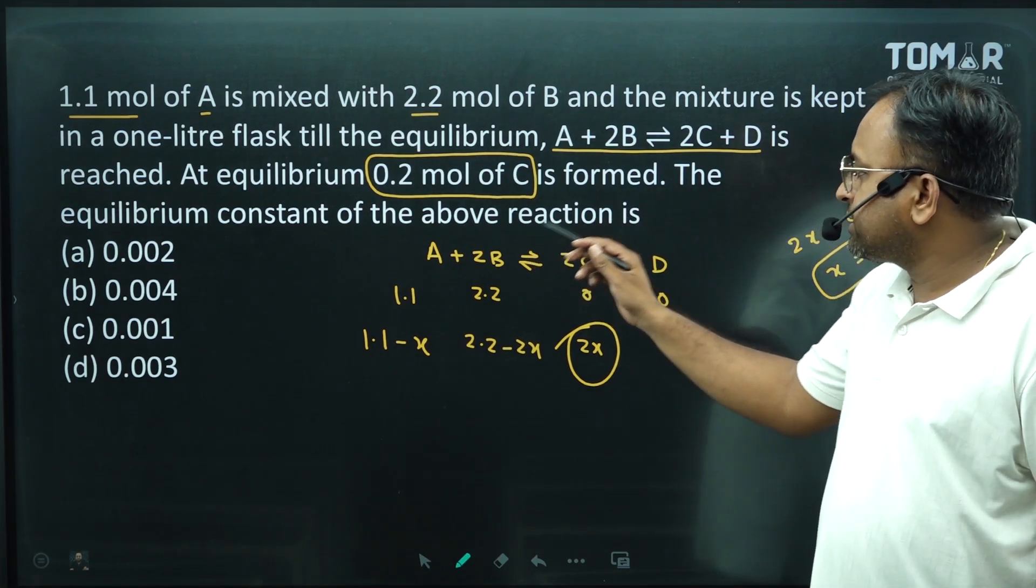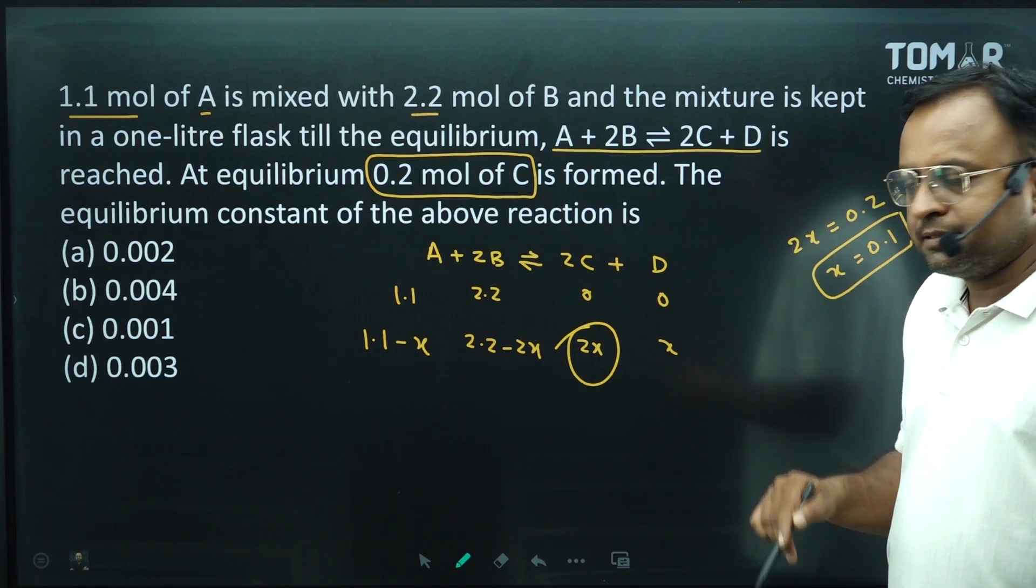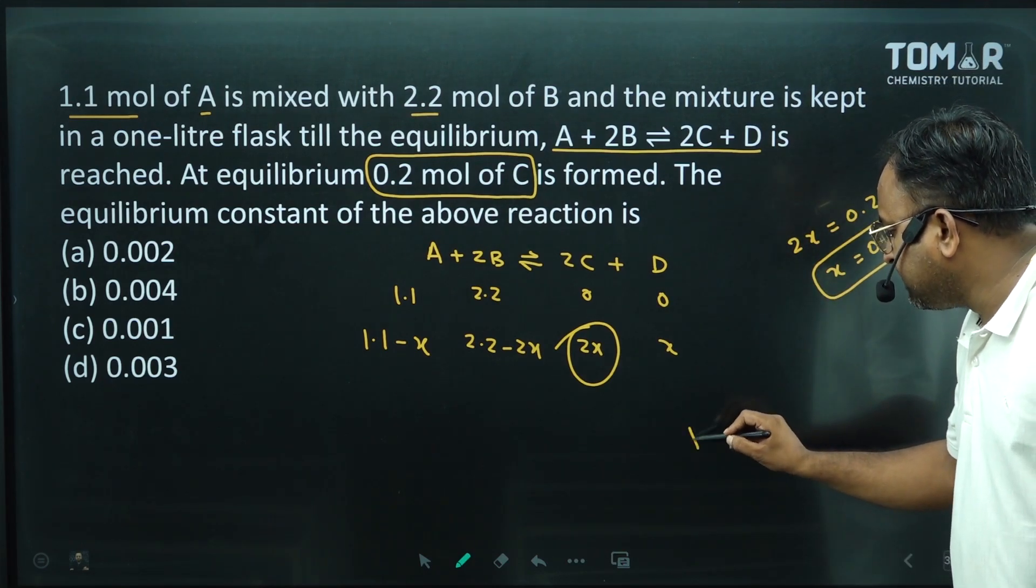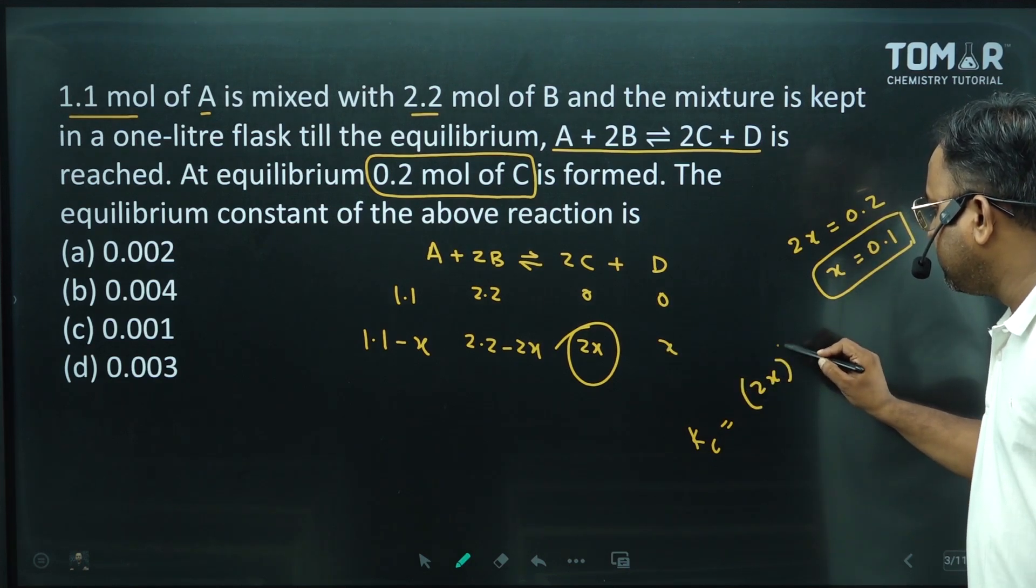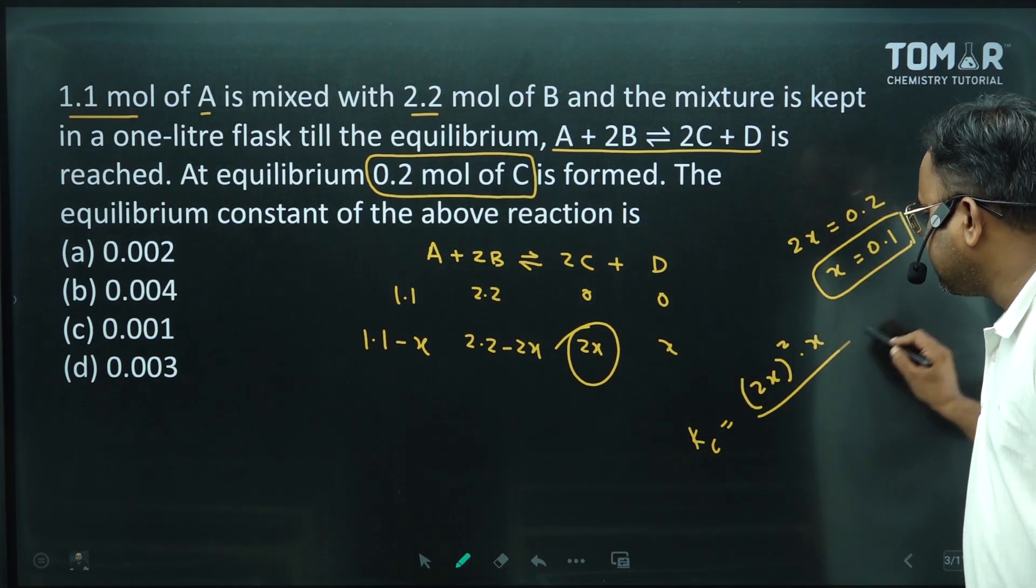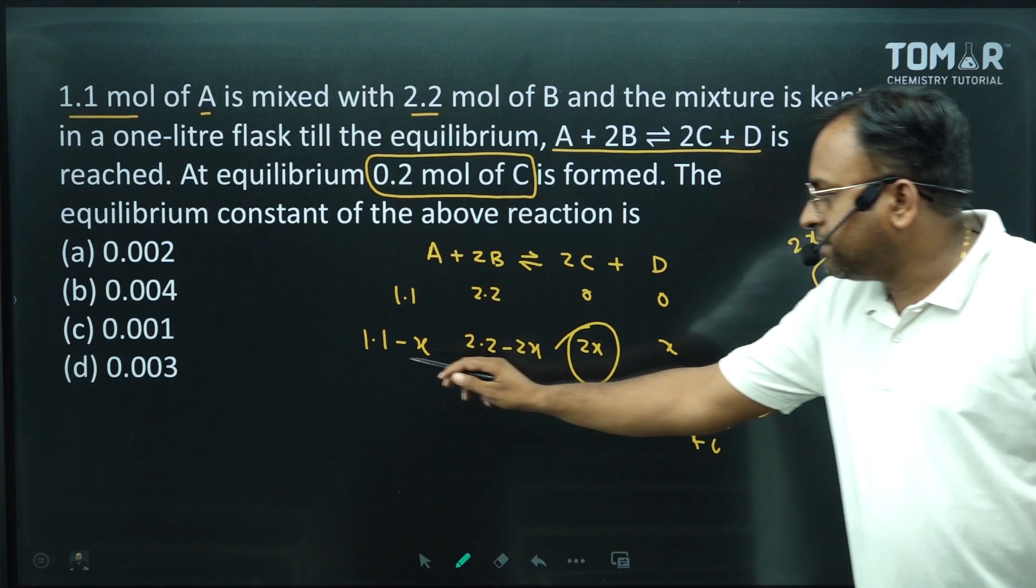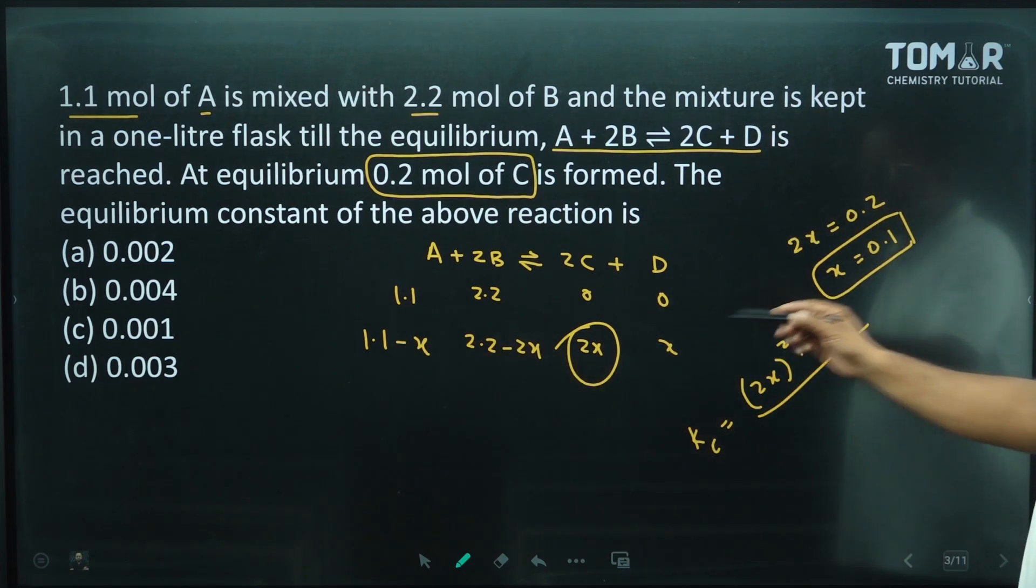The equilibrium constant for the above reaction, equilibrium constant means Kc. Kc will become 2x power 2 into x and 1.1 minus x. Now see, let's put the value here.